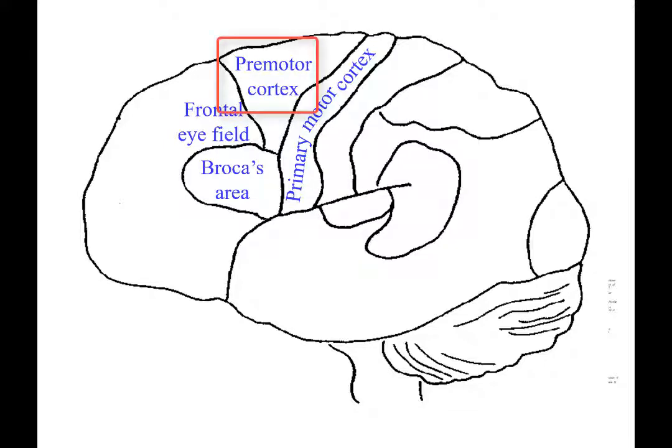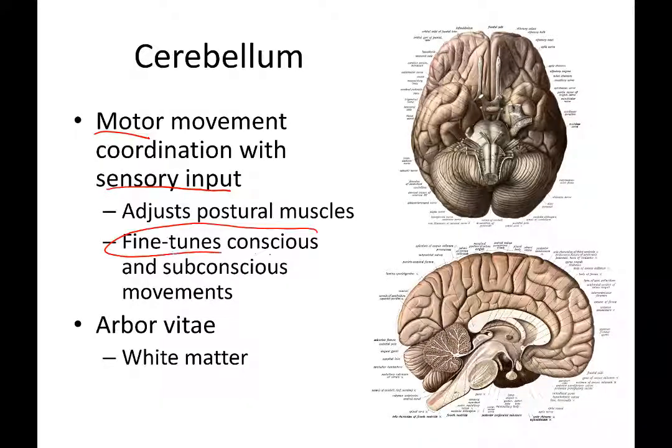The premotor cortex is like a piano player that tells the primary motor cortex exactly which muscles to activate at a specific time — like hitting piano keys to execute specific notes. The cerebellum's role in this is based on sensory input: if you step on a wet tile surface and your foot slides, that sensory input travels to the premotor cortex so muscle recruitment can be adjusted.